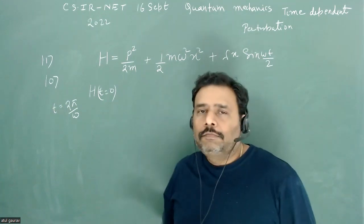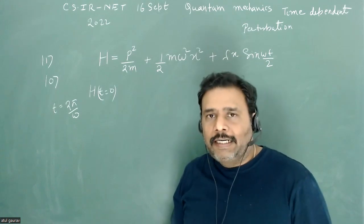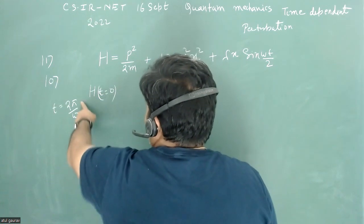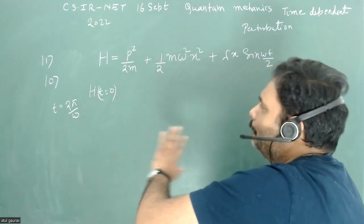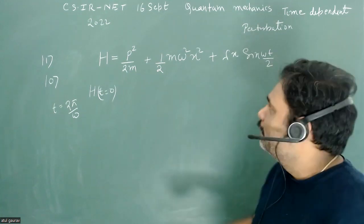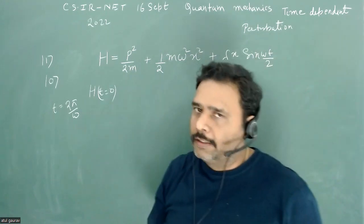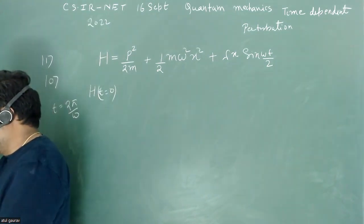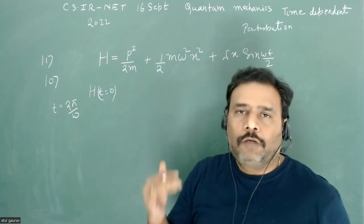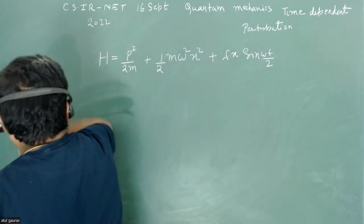The problem is stated in a complicated manner, but what they are actually asking is: what is the transition probability such that the particle will be in the first excited state of the original Hamiltonian at time t equal to 2π/ω? This is a purely time-dependent perturbation problem. We identify H₀ as the harmonic oscillator and H' as the perturbed part, and find the transition probability up to order lambda squared.